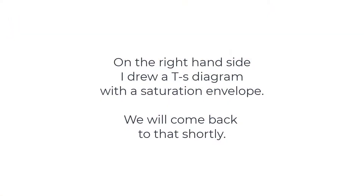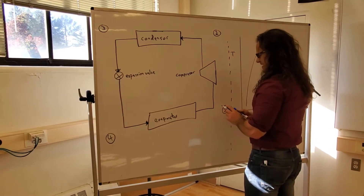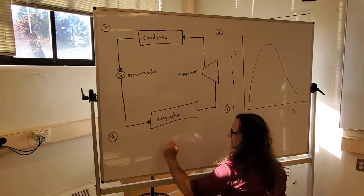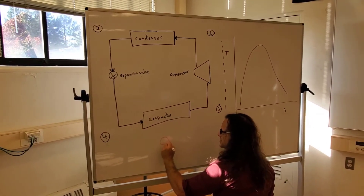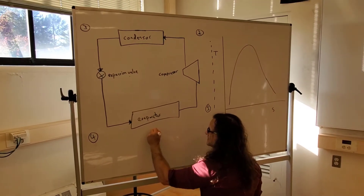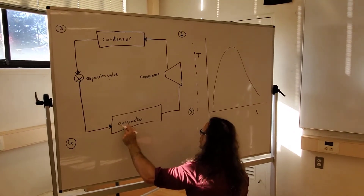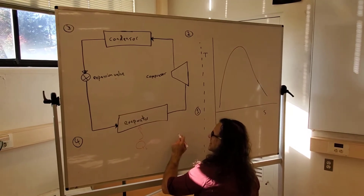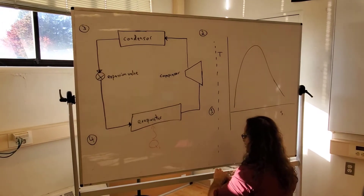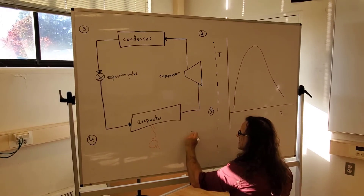Let's start with point one. Here we have an evaporator. Out of the evaporator is coming a working fluid that has taken heat from a low temperature — I'm going to call this QL. You could call it QL, QN, or QEvaporator. This is taking in heat from a low temperature source to evaporate our working fluid. Out of this, we're going to have a working fluid that comes out as a saturated gas.